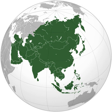Ingredients common to many cultures in the East and Southeast regions of the continent include rice, ginger, garlic, sesame seeds, chilies, dried onions, soy, and tofu. Stir-frying, steaming, and deep-frying are common cooking methods.